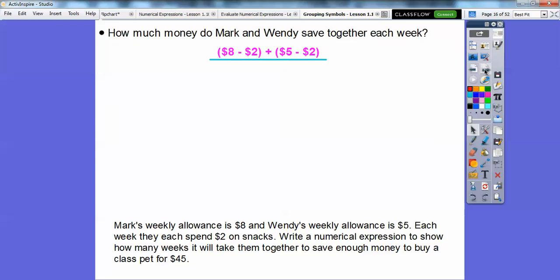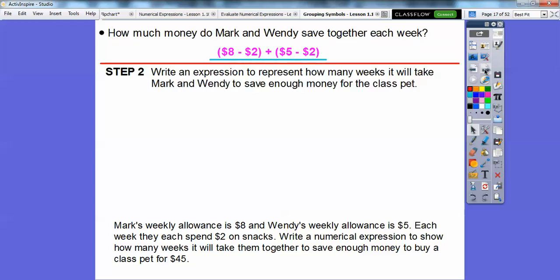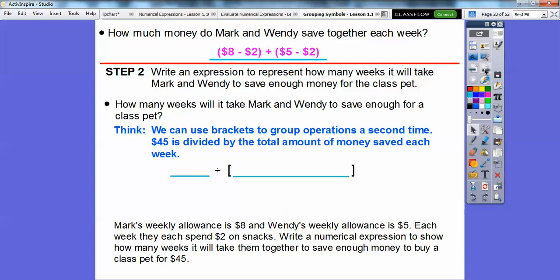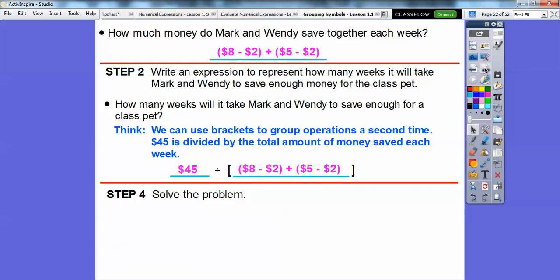So write an expression to represent how many weeks it will take Mark and Wendy to save enough money for the class pet. How many weeks will it take for Mark and Wendy to save enough money for that class pet? Well, remember, we can use brackets and groups. I'm at my house and my daughter just came home. My dogs are barking in the background. So it costs 45. The pet costs $45. And we're going to divide that by the total amount of money that they save each week. So 45 is going to go here. And then here is going to be the total amount of money that they save each week. Well, that's going to be this right here. These two expressions with plus signs is going to go inside of the brackets. And then 45 will go right there.